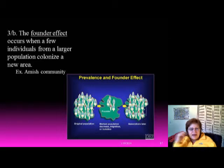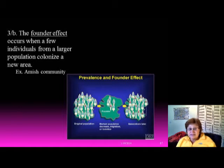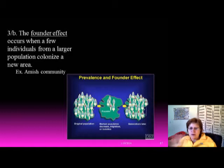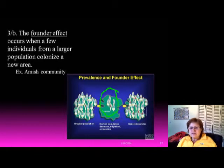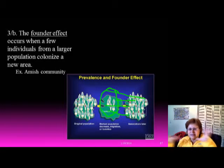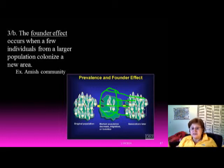The founder effect occurs when a few individuals move and colonize a new area. The Amish community is a good example — they came from Europe, settled in an area, and mate primarily within their group. If one person in that small founding population had a bad genetic disease, it can spread easily through interbreeding.